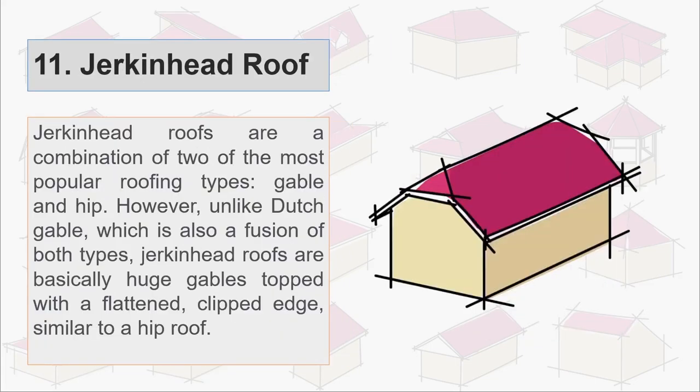Eleventh is jerkinhead roof. A jerkinhead roof is a combination of two of the most popular roofing types, gable and hip. However, unlike dutch gable which is also a fusion of both types, jerkinhead roofs are basically huge gables topped with a flattened clipped edge similar to a hip roof.